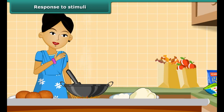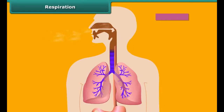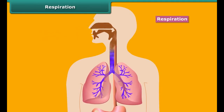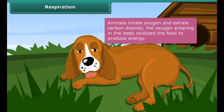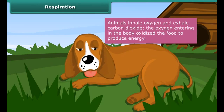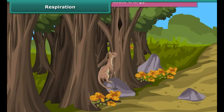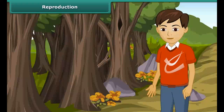Respiration is an important characteristic of living organisms. Animals inhale oxygen and exhale carbon dioxide. The oxygen entering the body oxidizes the food to produce energy, which is utilized by the body to carry out various life activities. Plants respire through tiny pores present on the surface of the leaf and stem.